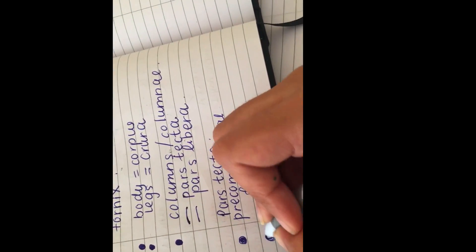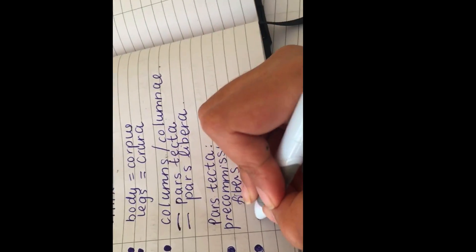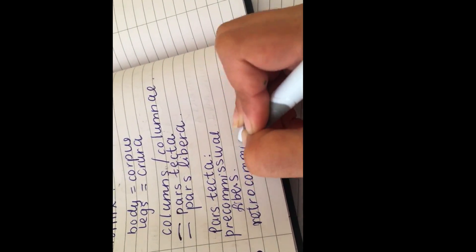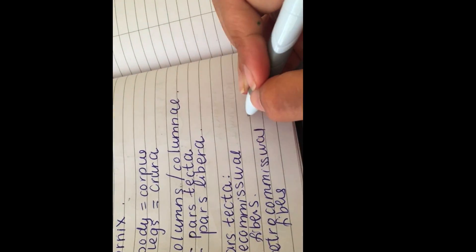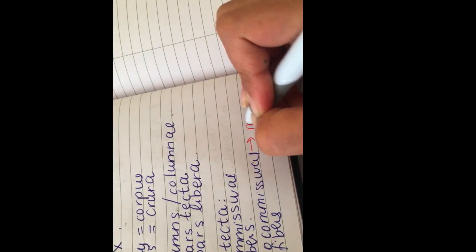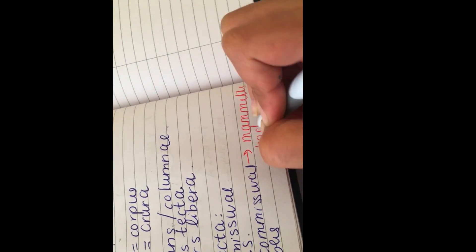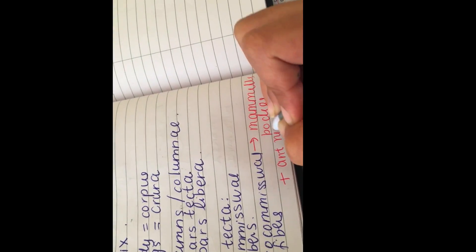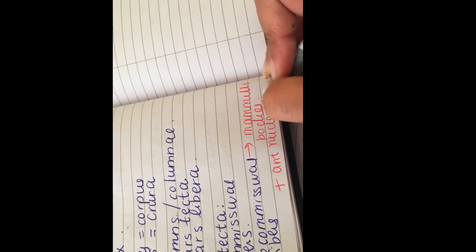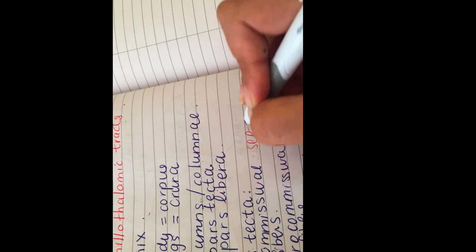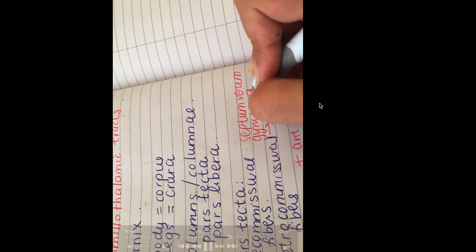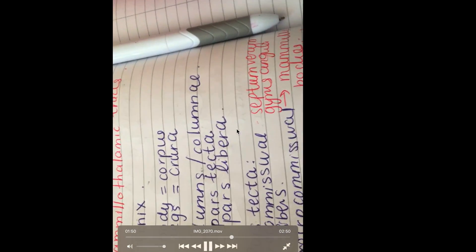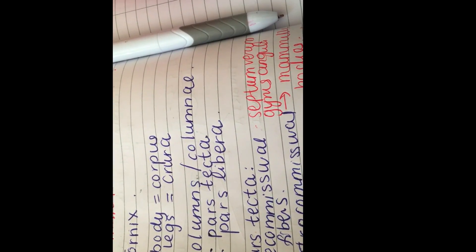Remember, everything is a fiber, everything's a pathway. Your pars tecta of your anterior columns contains pre-commissural fibers as well as retro-commissural fibers. You can pause the video and look at where these fibers go to.